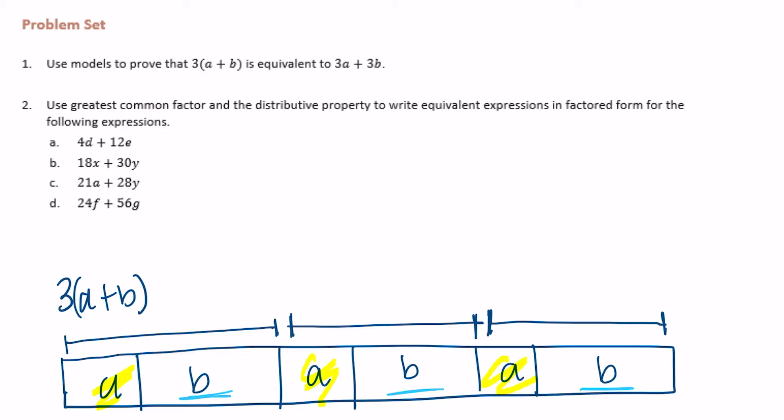Number two, use greatest common factor and the distributive property to write equivalent expressions in factored form for the following expressions. 4d plus 12e.